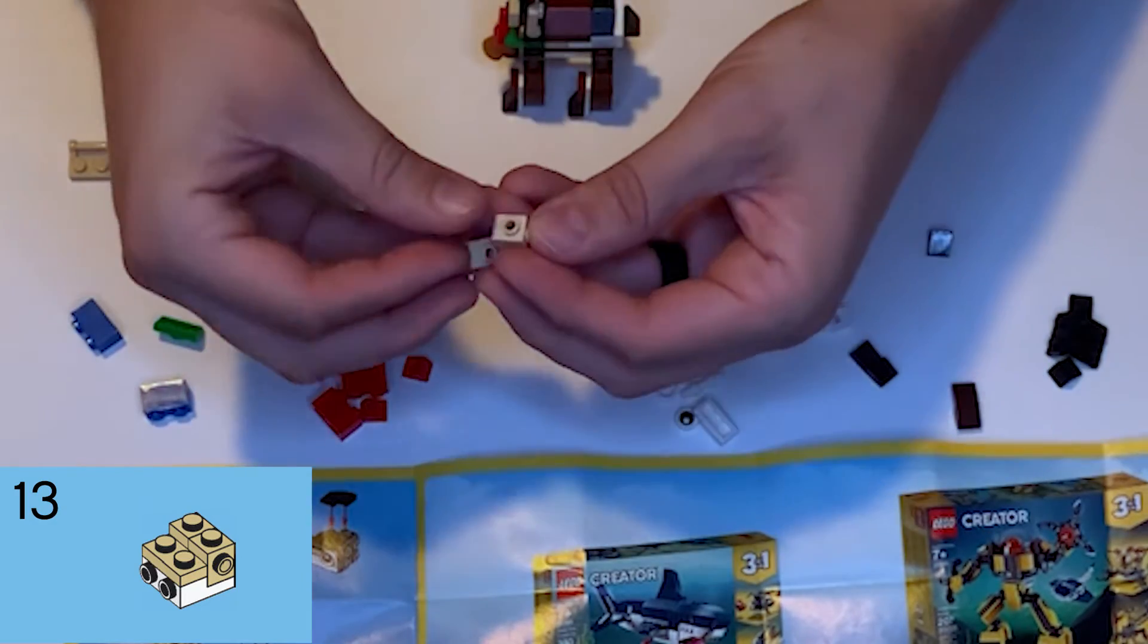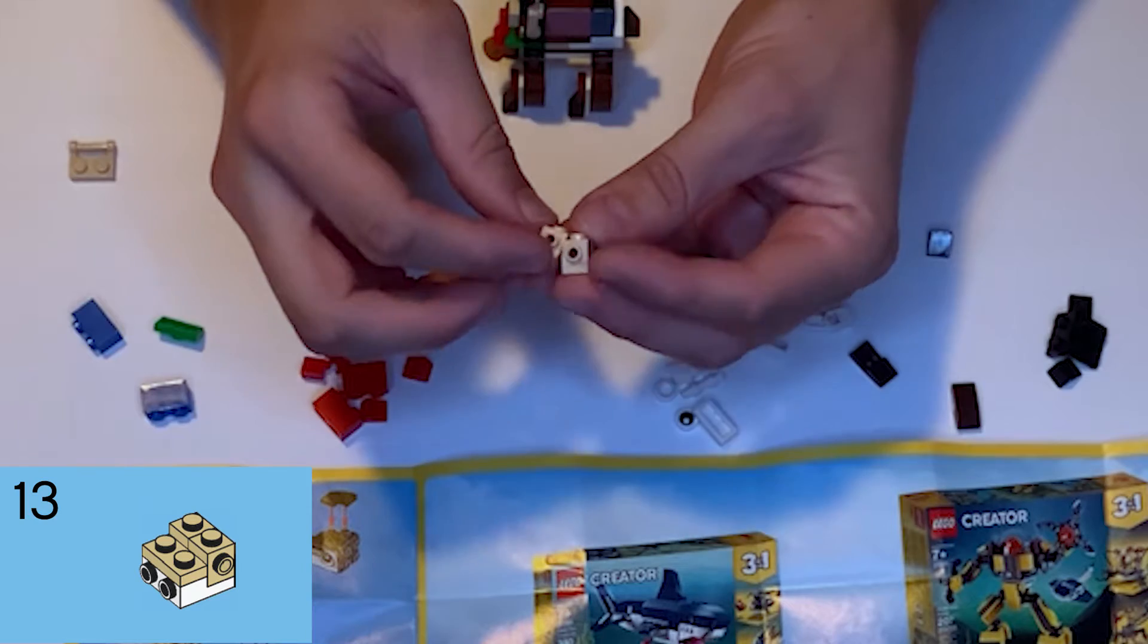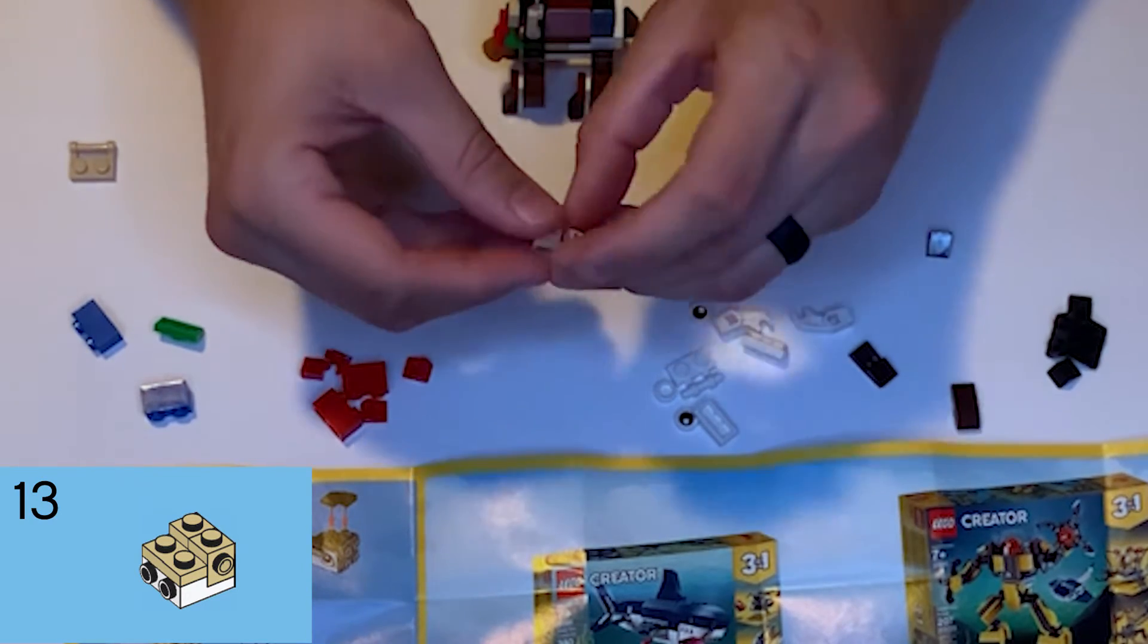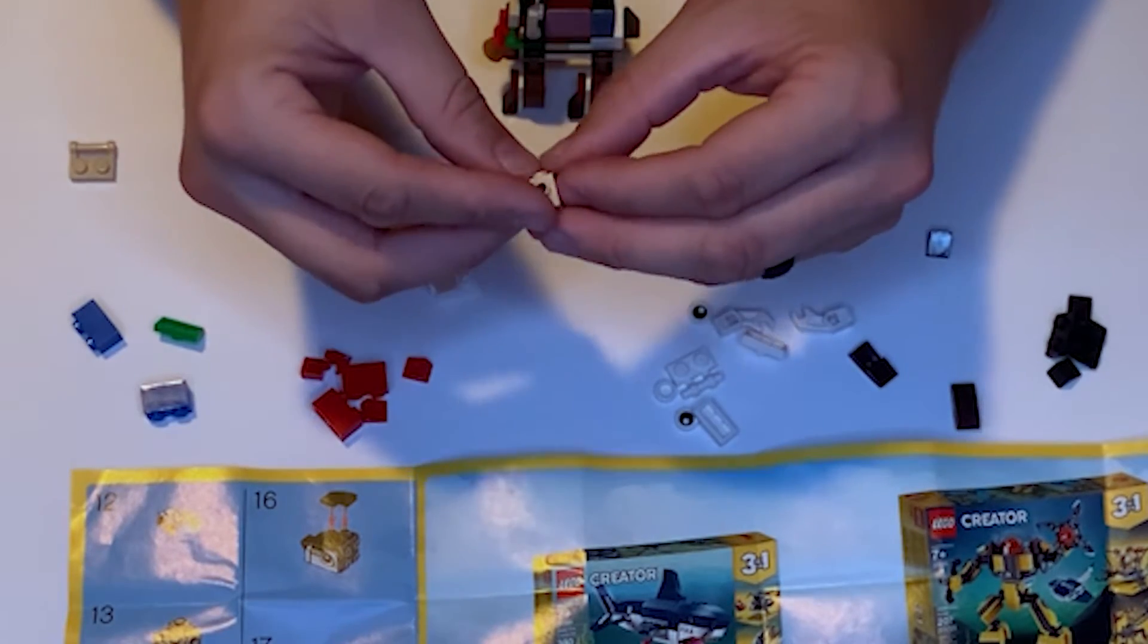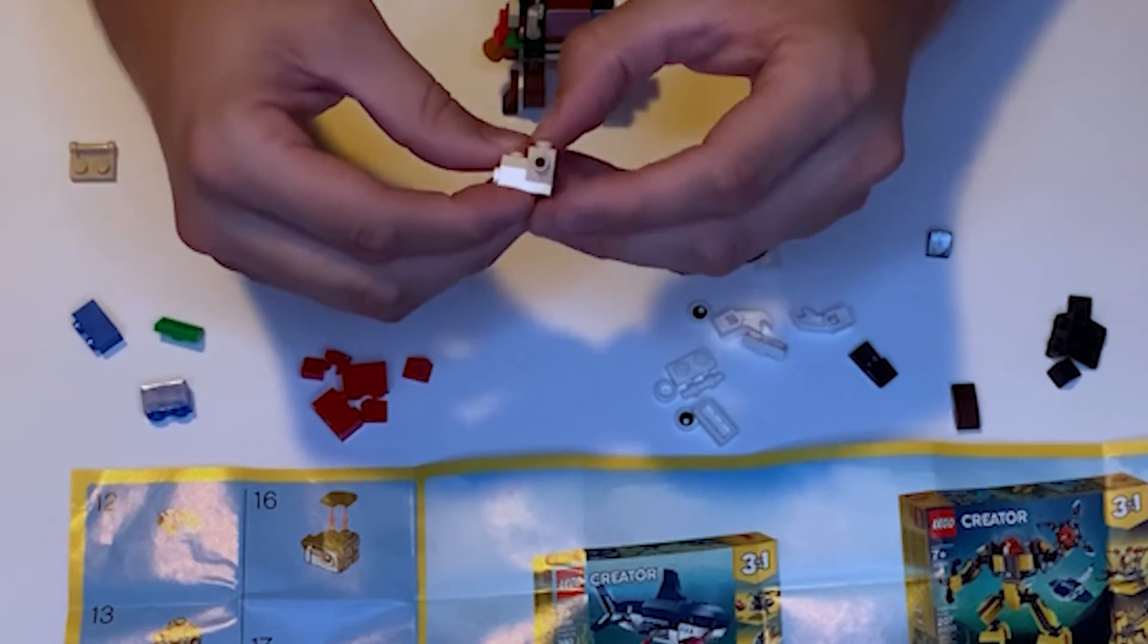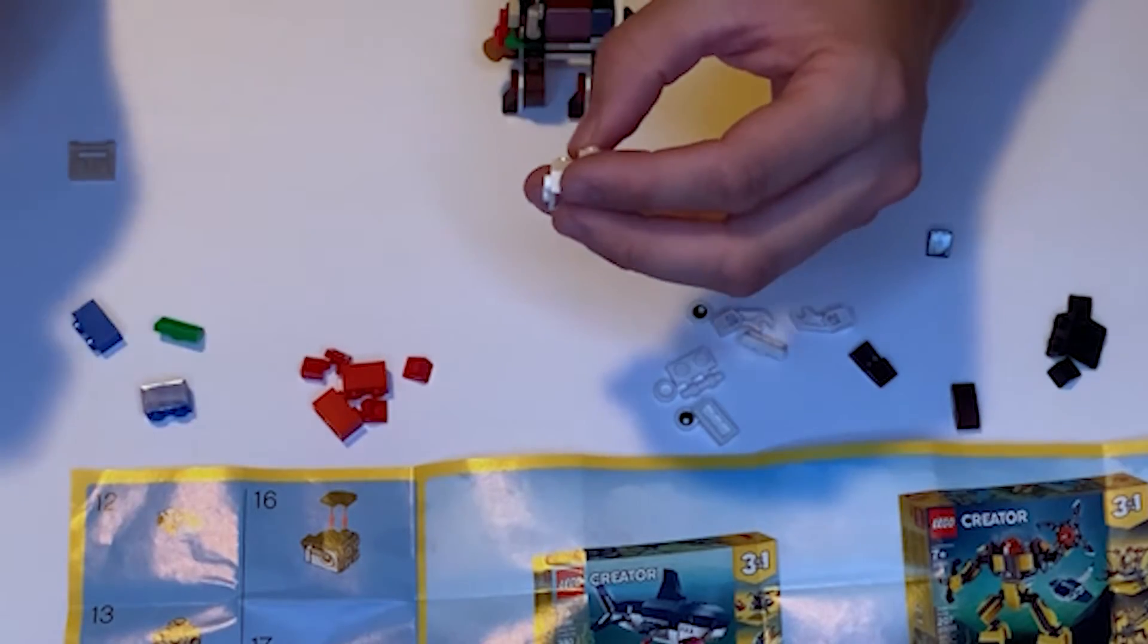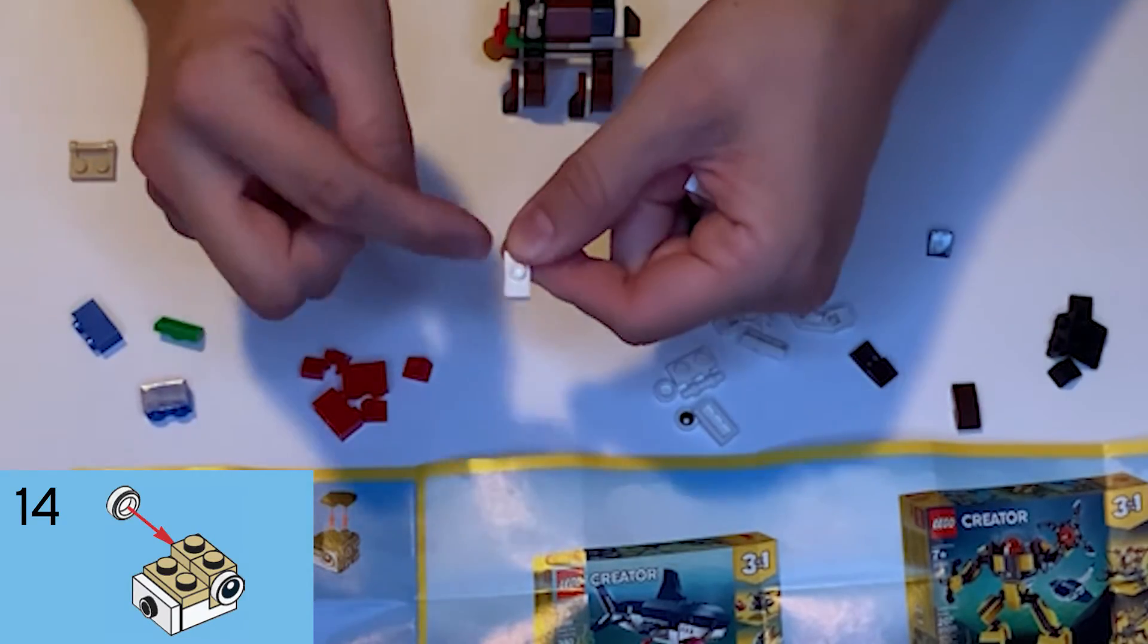We're gonna put them both together so that those two side-facing studs are next to each other, so that they're opposite, and they're gonna go on the lower step of this white piece so that they're facing outwards. Then we're gonna take this white 1x2 flat with the single centered stud.